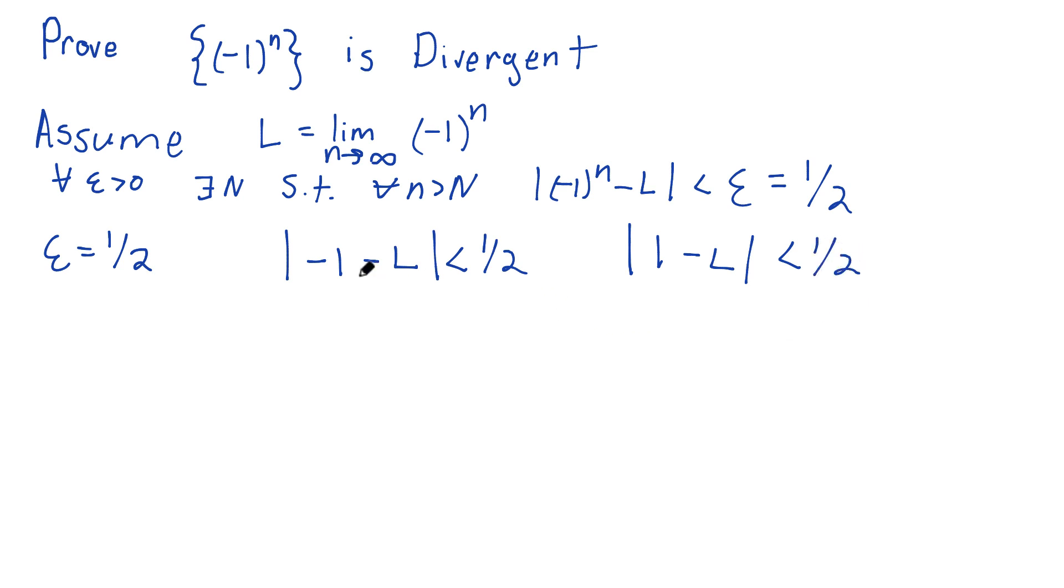And here's the trick. Let's add these inequalities together. If I add up the right-hand sides, a half plus a half is 1. And if I add up the left-hand sides, I'd have the absolute value of minus 1 minus L plus the absolute value of 1 minus L. This is supposed to be less than 1.